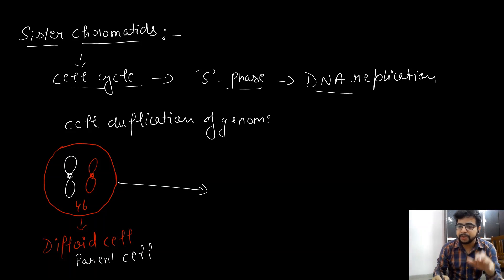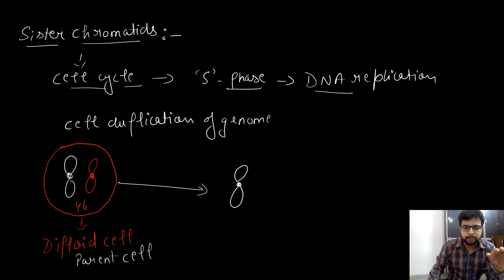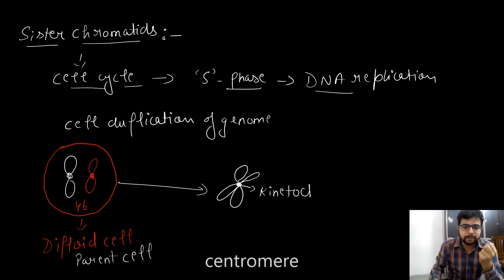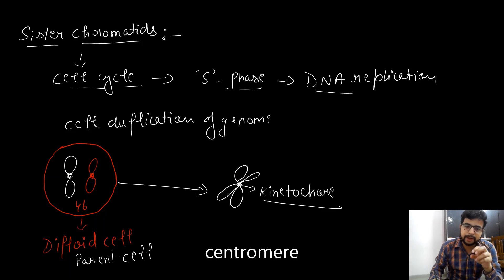Now, when DNA replication takes place, this particular white chromosome will duplicate itself. When it is duplicating itself, it is tied with a particular knot which is common for the pre-existing parent chromosome as well — and this is known as the kinetochore. It's actually a complex of proteins. Till the time the two are attached at this kinetochore, the two are considered as sister chromatids.